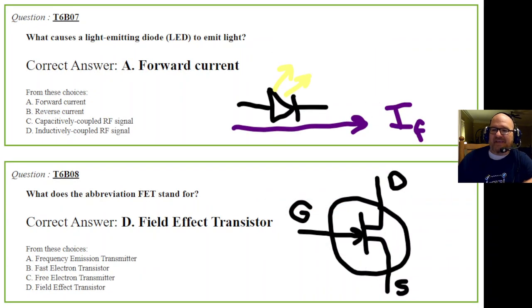Question 7: What causes a light emitting diode, or LED, to emit light? From these choices, forward current is the correct answer. There's a lot more to LEDs than just forward current - go read the story about how the blue LED was invented, it's quite intriguing. This is conventional current going from positive to negative. The LED symbol usually has two arrows coming off it. Forward current is what causes an LED to emit light.